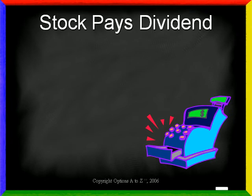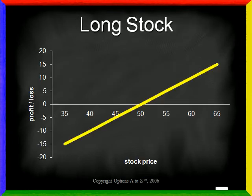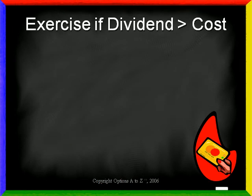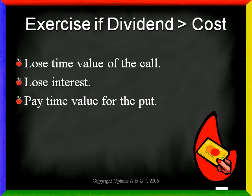What can we say about those times when a stock is about to pay a dividend? If the stock is about to pay a dividend, it might pay to exercise early, but even for these cases you should still wait as long as possible and exercise the day before the dividend is paid. In order to determine if it is advantageous to exercise a call early to collect a dividend, you must make equal risk comparisons. When you exercise the call and take delivery of the stock, your profit and loss diagram becomes a straight line. In order to keep the risk profile the same as the long call, you would need to purchase a put option of the same strike, which would flatten out the lower portion of the curve. Therefore, if you wish to exercise a call to collect a dividend, you should only do so if the dividend is greater than the cost to acquire it. When you exercise a call early, you will lose the time value of the call, you will lose interest by paying for the stock early, and you'll have to pay a time value for the put in order to keep your risk profile the same.